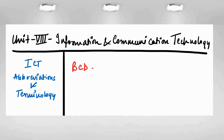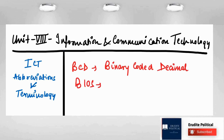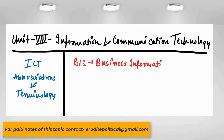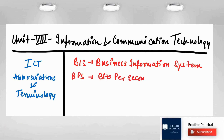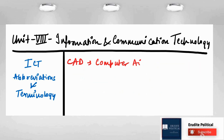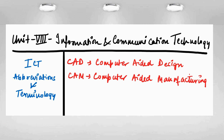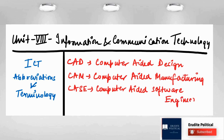Next is BCD — Binary Coded Decimal. Then comes BIOS — Basic Input Output System. Next is BIS — Business Information System. Then BPS — Bits Per Second. Next is TRP — Television Rating Point. Next is CAD — Computer Aided Design. Next is CAM — Computer Aided Manufacturing. Next is CASE — Computer Aided Software Engineering.